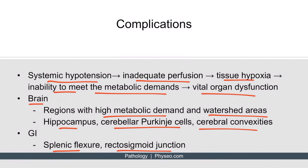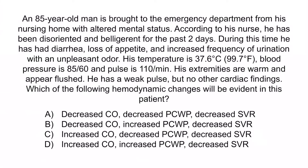Let's review with a question. An 85-year-old man is brought to the emergency department from his nursing home with altered mental status. According to his nurse, he has been disoriented and belligerent for the past two days. During this time, he has had diarrhea, loss of appetite, and increased frequency of urination with an unpleasant odor. His temperature is 37.6 degrees Celsius, blood pressure is 85 over 60, and pulse is 110 per minute. His extremities are warm and appear flushed. He has a weak pulse but no other cardiac findings. Which of the following hemodynamic changes will be evident in this patient? A. Decreased cardiac output, decreased pulmonary capillary wedge pressure, and decreased systemic vascular resistance. B. Decreased cardiac output, increased pulmonary capillary wedge pressure, and decreased systemic vascular resistance. C. Increased cardiac output, decreased pulmonary capillary wedge pressure, and decreased systemic vascular resistance. Or D. Increased cardiac output, increased pulmonary capillary wedge pressure, and decreased systemic vascular resistance.